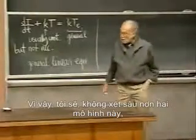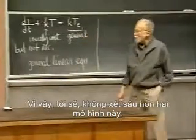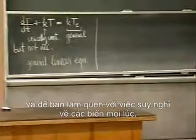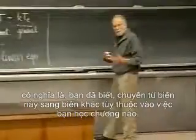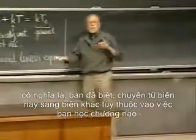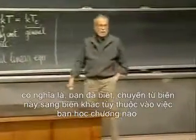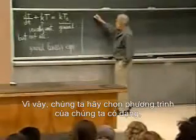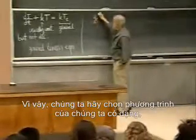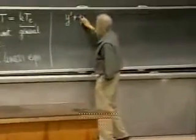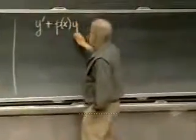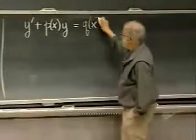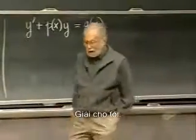I'm going to, in order not to play favorites with these two models, and to get you used to thinking of new variables all the time — being eclectic, switching from one variable to another according to which particular lecture you happen to be sitting in. So, let's take our equation in the general form: y prime plus p of x times y equals q of x. Solve me.